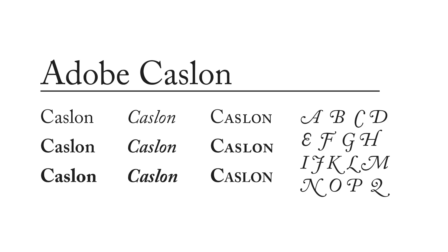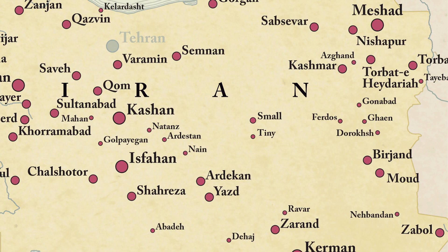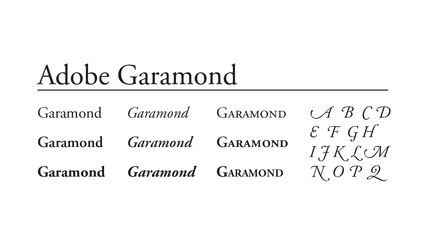Useful serif typefaces. Adobe Caslon is a good choice — it's an elegant classic in OpenType format with excellent swash characters, alternates, and small caps. Adobe Garamond is another great serif choice and also comes in a good condensed version, a rarity for a serif typeface. It's also in OpenType format, so it has all of the extra characters you might need.